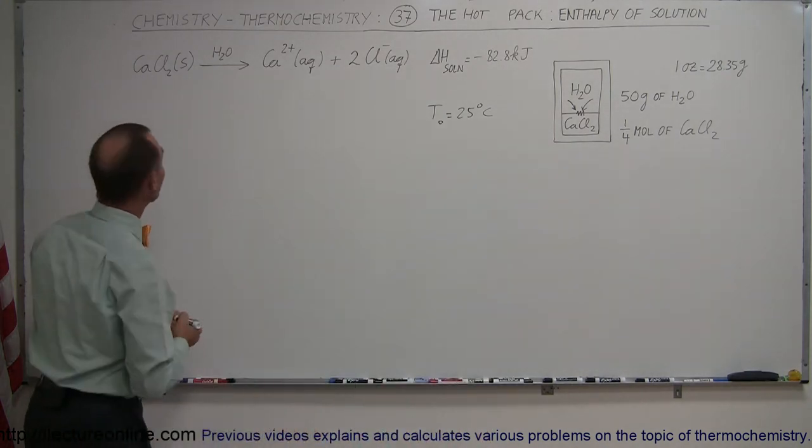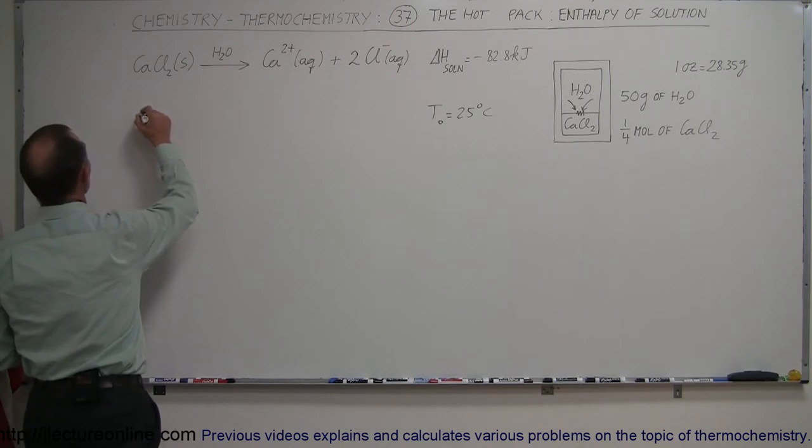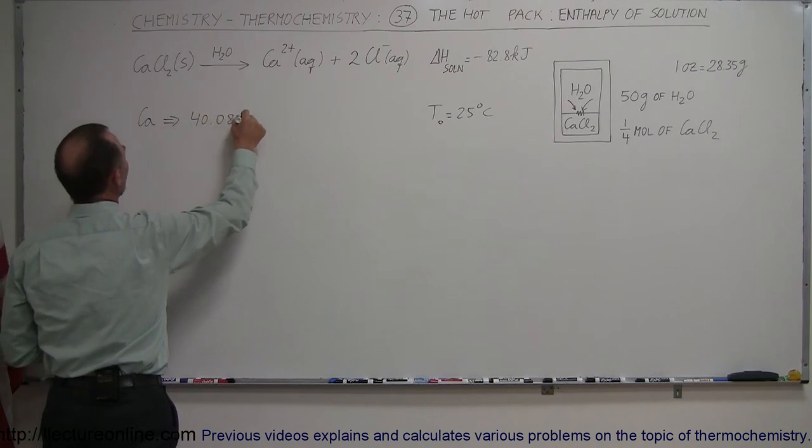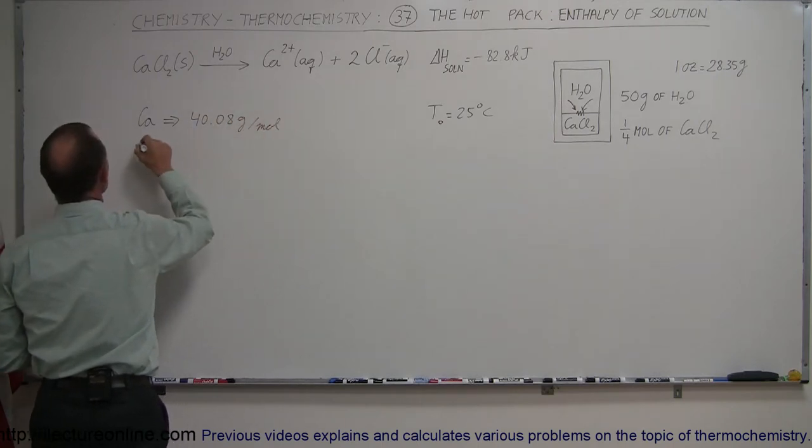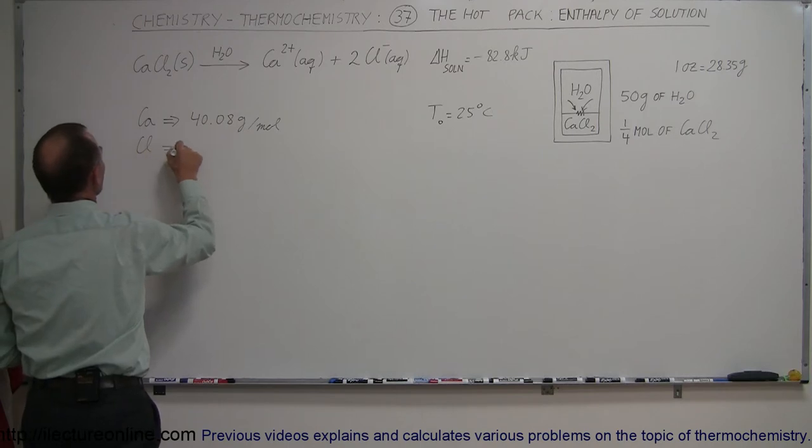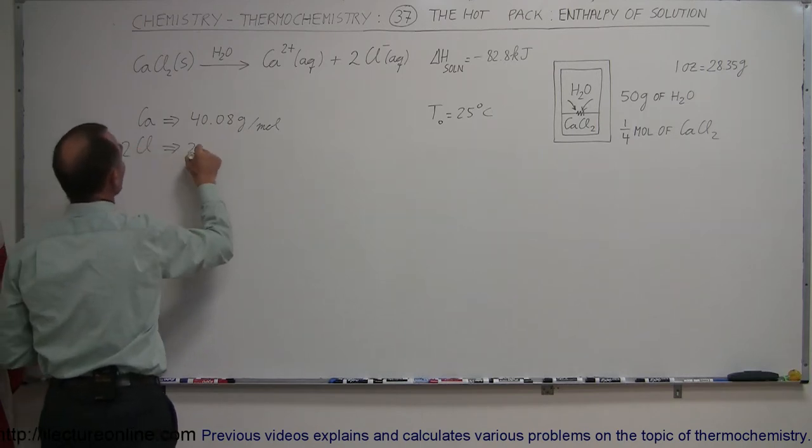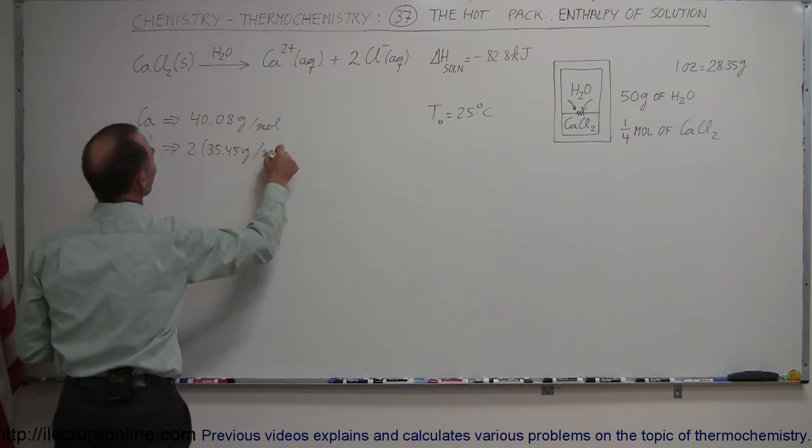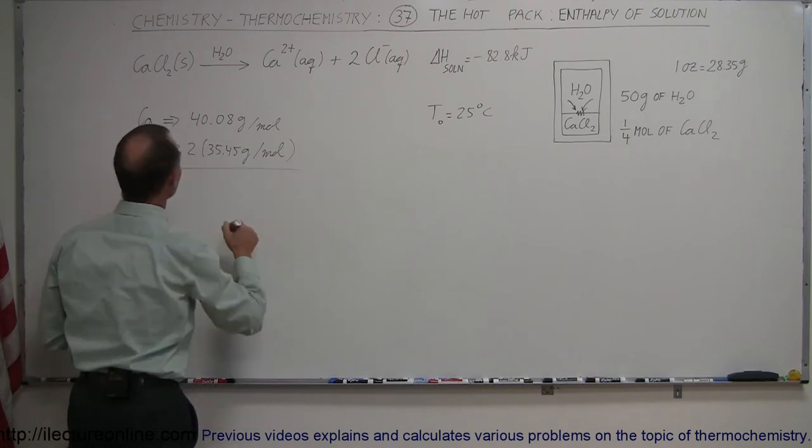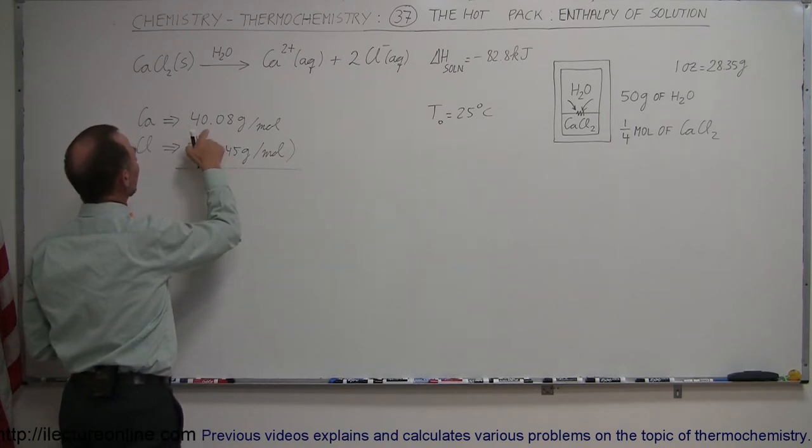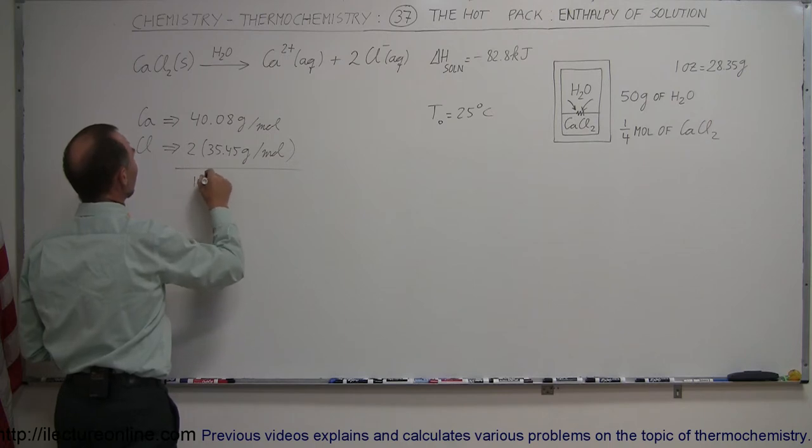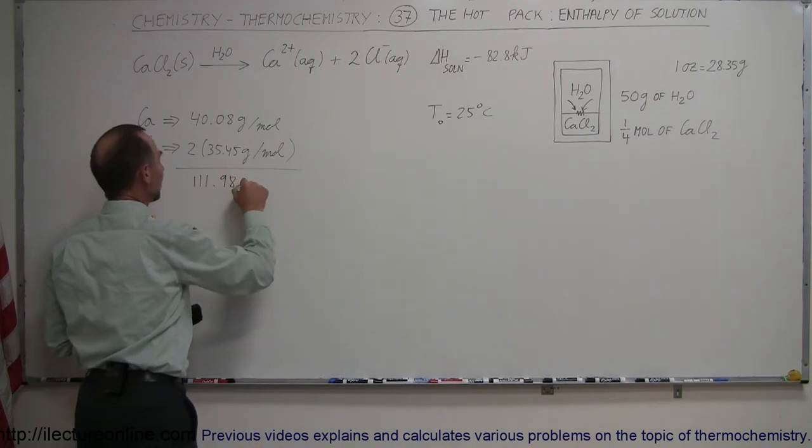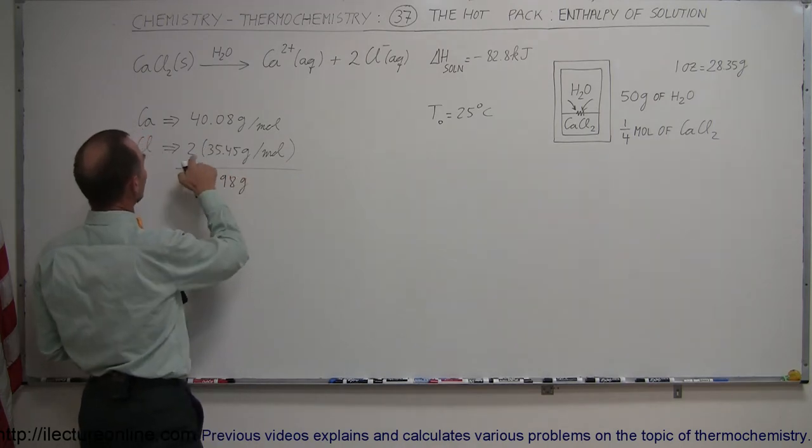Now what is the molar mass of calcium chloride? Well, the molar mass of calcium is 40.08 grams per mole, and for chlorine, we have two chlorines, so it's two times 35.45 grams per mole. When we add all that together, that would be 70.9 and 40, that would be 110, about 110.98 grams per mole.